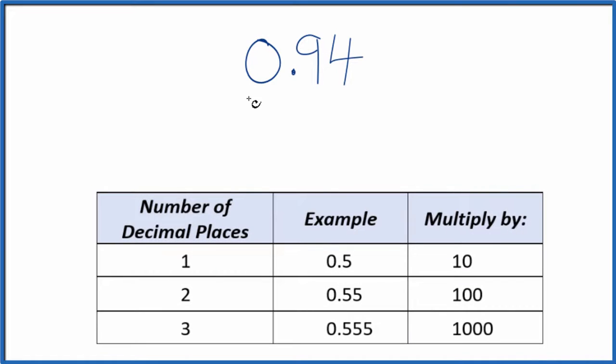If you're asked to convert the decimal 0.94 to a fraction, here's how you do it. Let's first put it as 0.94 over 1. We're dividing by 1, we don't change the value, but now we have the start of a fraction. If we can get this to a whole number, that'll be really helpful.